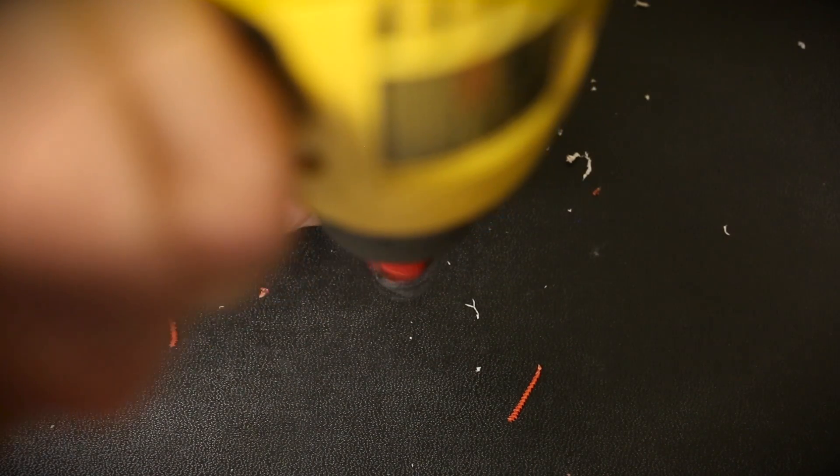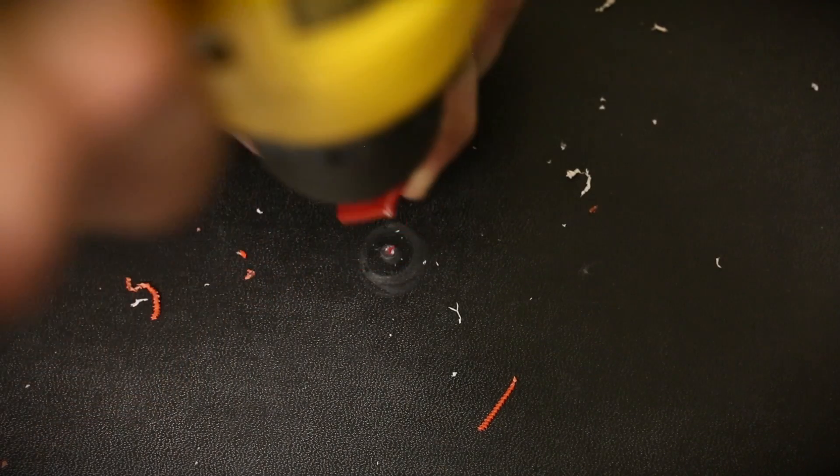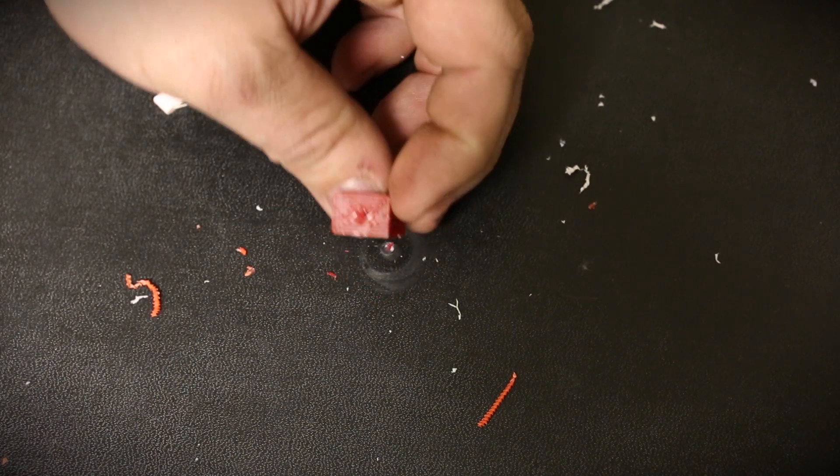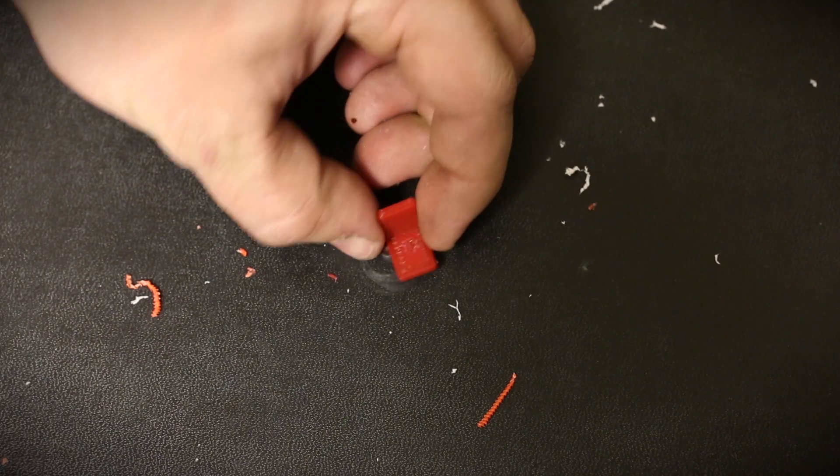Finally, let's try drilling a hole in the NinjaFlex. I suspect the drill bit will go through, but we probably won't get a clean hole since it has so much give in it. Much as I suspected, the drill bit punched right through the material.